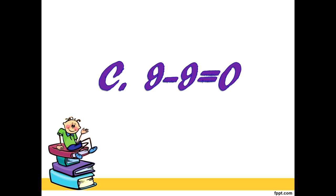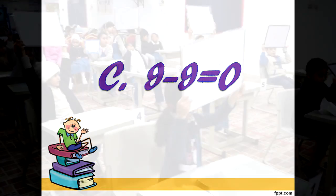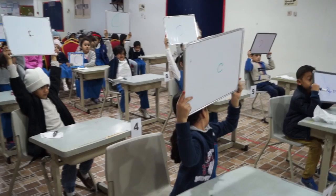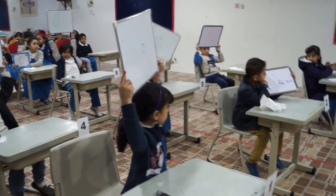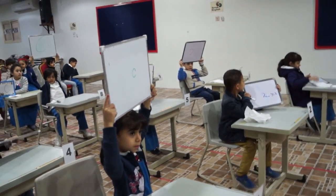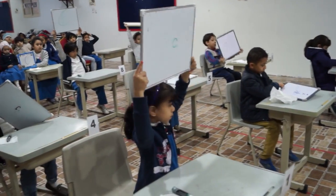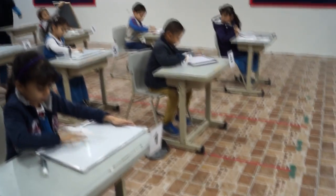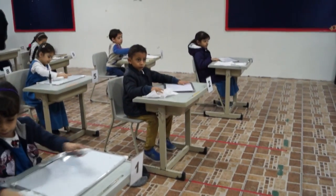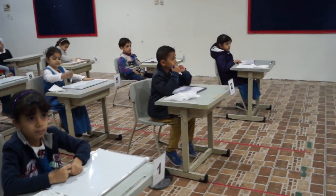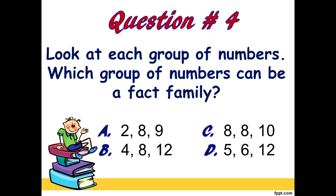The correct answer is C, 9 minus 9 equals 0. Number 1, correct. Number 2, not correct. Number 3, not correct. Number 4, correct. 5, correct. 6, correct. 7, correct. 8, correct. 9, correct. 10, correct.